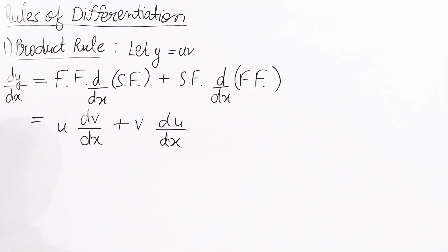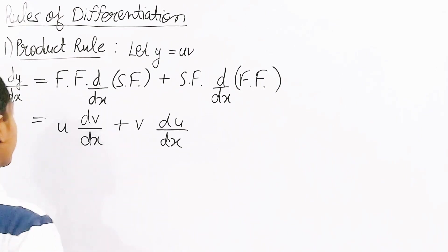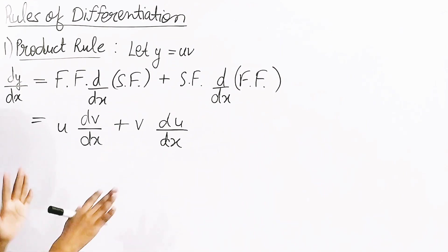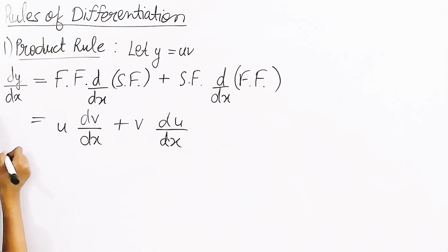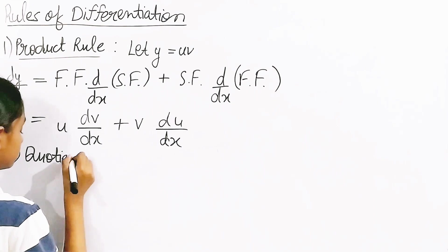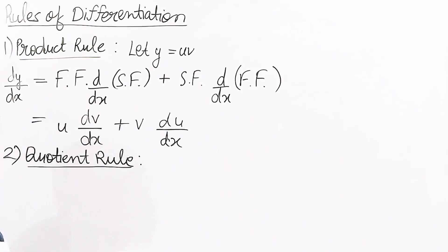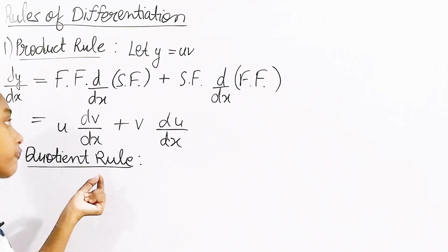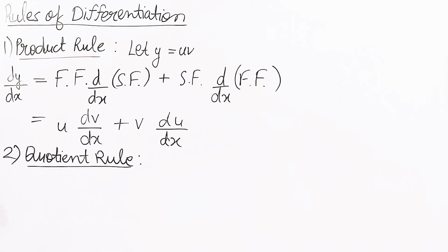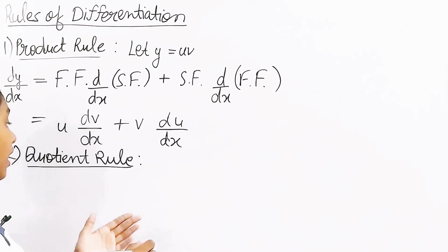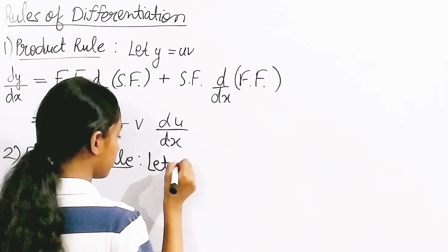So that was our first rule — the product rule. Now let's move on to the second rule, which is the quotient rule. In the quotient rule we do a similar concept but here we will be subtracting, and there's a little bit of difference. Here we will have a denominator and numerator — let y be equal to u divided by v.